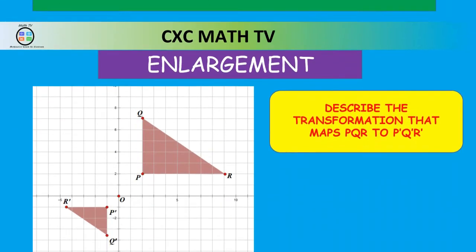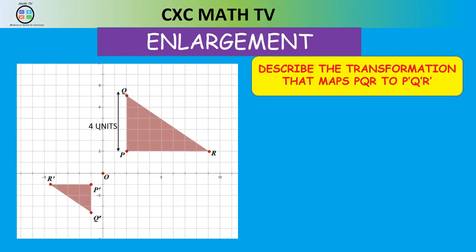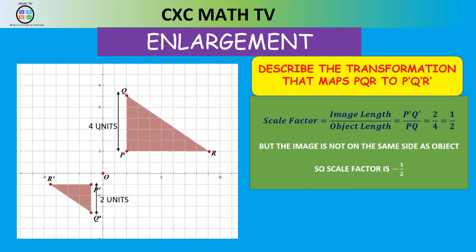Let's look at an example. Describe the transformation that maps triangle PQR to triangle P prime Q prime R prime. The scale factor is image length P prime Q prime, which is 2, over object length PQ, which is 4 — giving one half. But the image is not on the same side as the object, so the scale factor is negative. Therefore, the scale factor is negative one half.